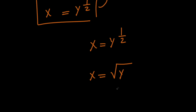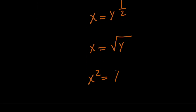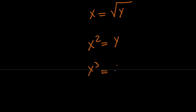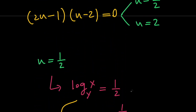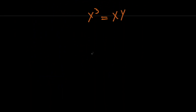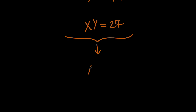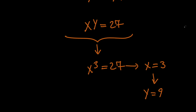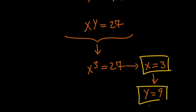Squaring both sides gives x squared equals y. Multiplying both sides by x gives x cubed equals x times y. Since x times y equals 27, we have x cubed equals 27, and therefore x equals 3. Since x equals 3 and x times y equals 27, we can see that y equals 9. So x equals 3 and y equals 9 is the first solution.